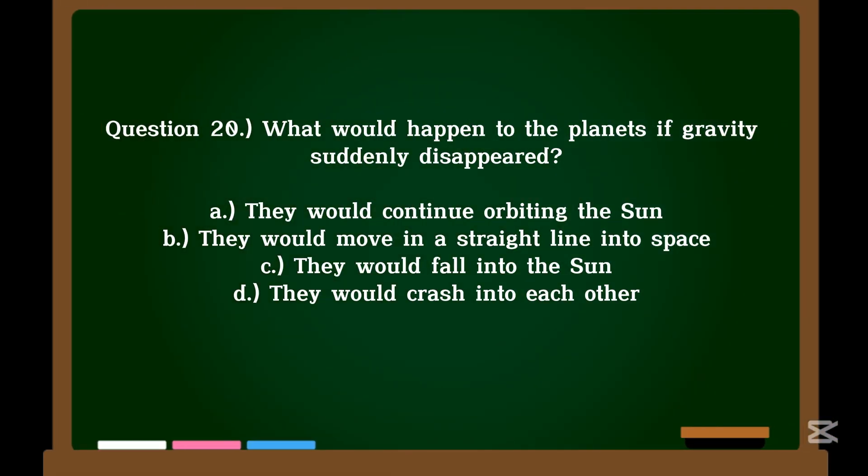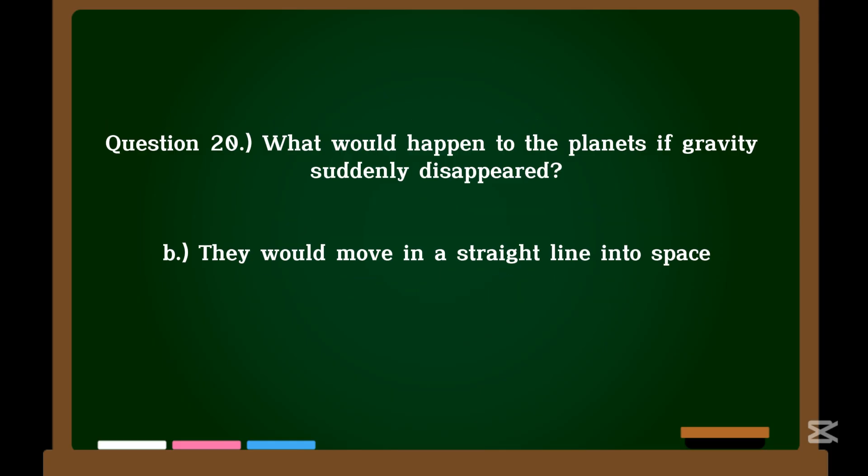Question 20. What would happen to the planets if gravity suddenly disappeared? A. They would continue orbiting the sun. B. They would move in a straight line into space. C. They would fall into the sun. D. They would crash into each other. Correct answer: B. They would move in a straight line into space.